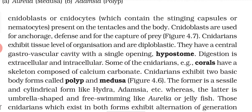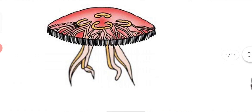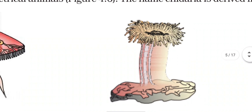Cnidarians exhibit two basic body forms: polyp and medusa. The polyp is a sessile, cylindrical form — like Hydra and Adamsia. The medusa is an umbrella-shaped, free-swimming form — like Aurelia or jellyfish. In the diagram, the first form shown is Aurelia, which is the medusa phase, and the second is the polyp phase.